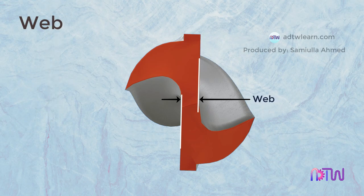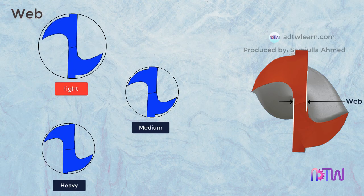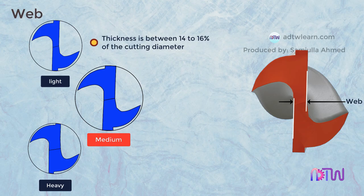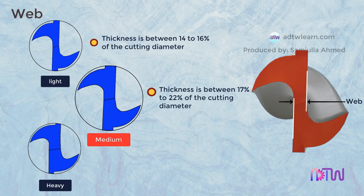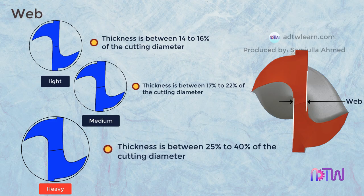The web falls into three categories: light, medium, and heavy. Light: the thickness is between 14% to 16% of the cutting diameter; these webs are found in fast helix general purpose drills and are the weakest of the drill webs. Medium: typical thickness is between 17% to 22% of the cutting diameter. Heavy: thickness is between 25% to 40% of the cutting diameter; this kind of web is used in heavy duty drills.